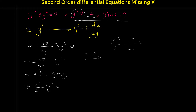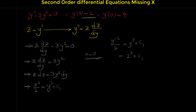So we plug in: y prime squared over 2 equals y cubed plus c1. With y prime at x=0 equal to 4: 4 squared over 2 equals 16 over 2 equals 8. And y cubed is 2 cubed equals 8. So 8 minus 8 equals 0, meaning c1 is 0.